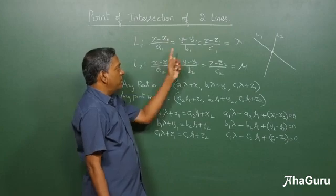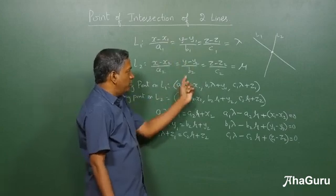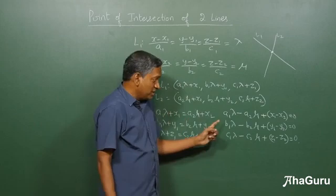So you know x1, y1, z1, a1, b1, c1, x2, y2, z2, a2, b2, c2. All these are constants.